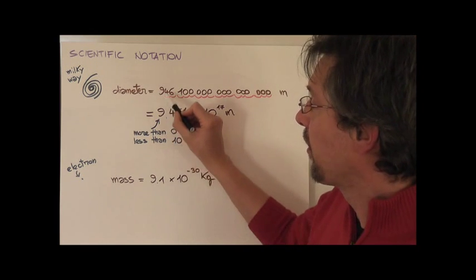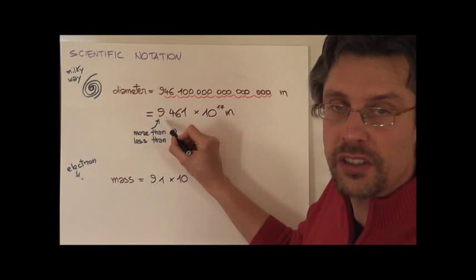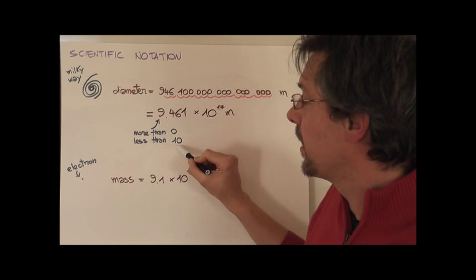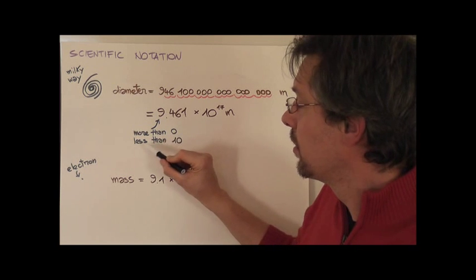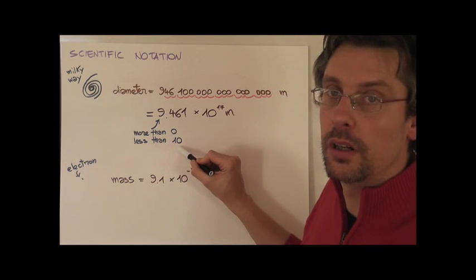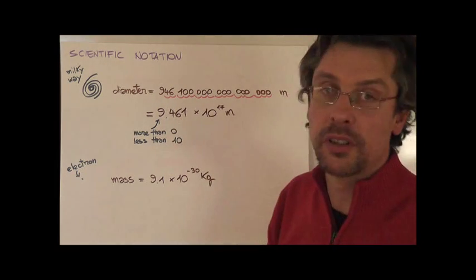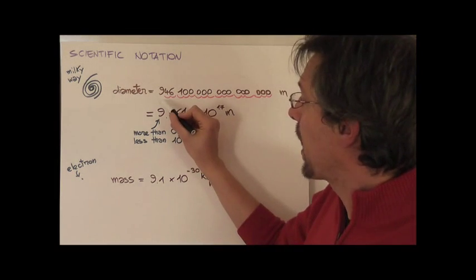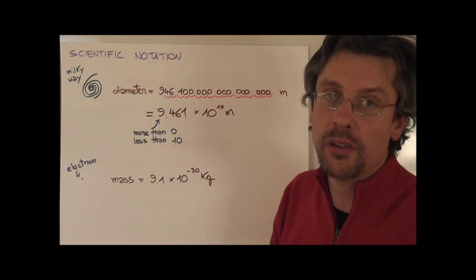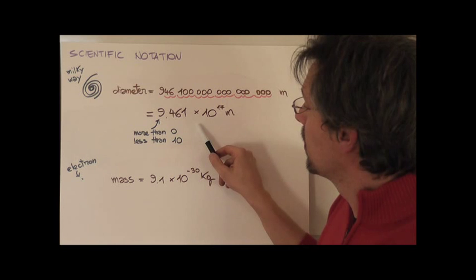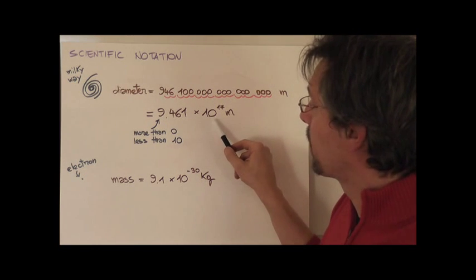As you can see, we write the first digit. The first digit in scientific notation has to be bigger than 0 but smaller than 10. So 9 is fine. Then we put our decimal point. We write the rest of the non-zero numbers. And then, what do you do? You multiply by the power of 10.